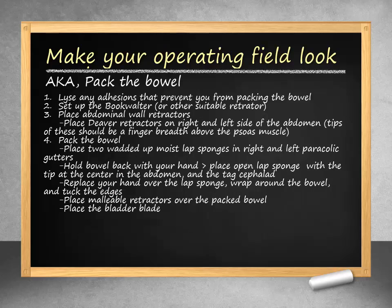After our exploration is complete, we should prepare our operative field for adequate exposure to the pelvic structures. Any adhesions that prevent you from adequately packing the bowel should first be lysed. Next, the Bookwalter retractors should be placed. Abdominal wall retractors should be placed on the left and right sides of the incision. Now the bowel can be packed — each surgeon has their preference, but we prefer first packing a wadded-up moist lap sponge in each pericolic gutter.